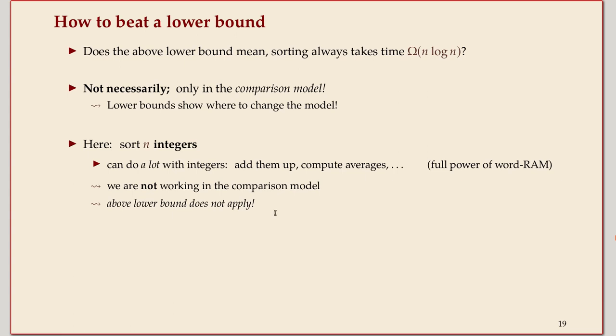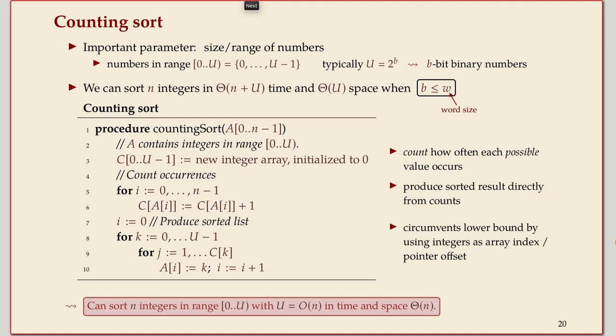Formally, the first statement is our lower bounds for integers. We can do a lot more with integers than comparing them. We can add them up, compute averages, compute arbitrarily complicated functions about numbers. The question is, how much does this help for sorting? If you think about it for a moment, it might not help that much. But it turns out it's enough to beat this lower bound for comparison-based sorting.